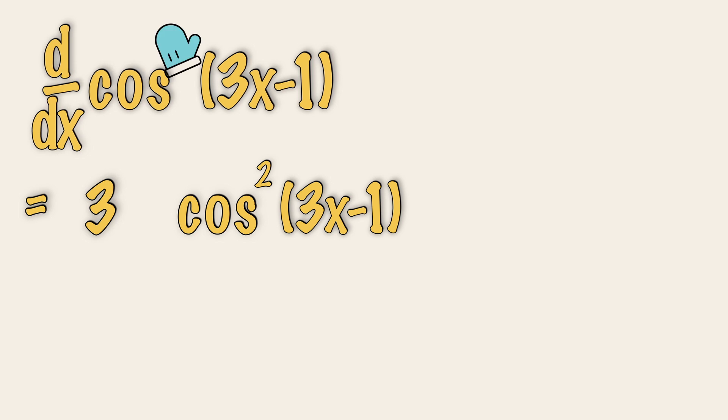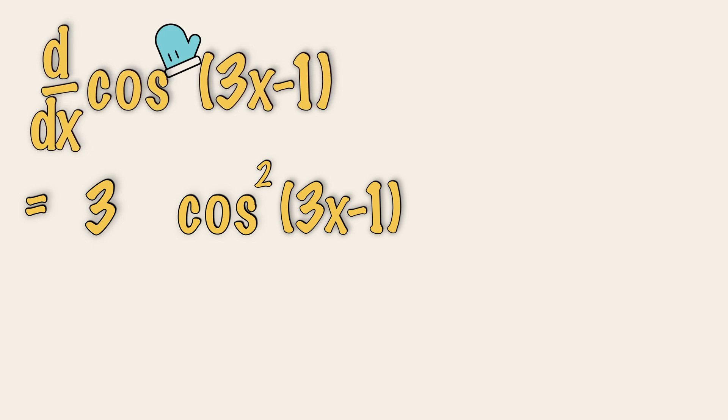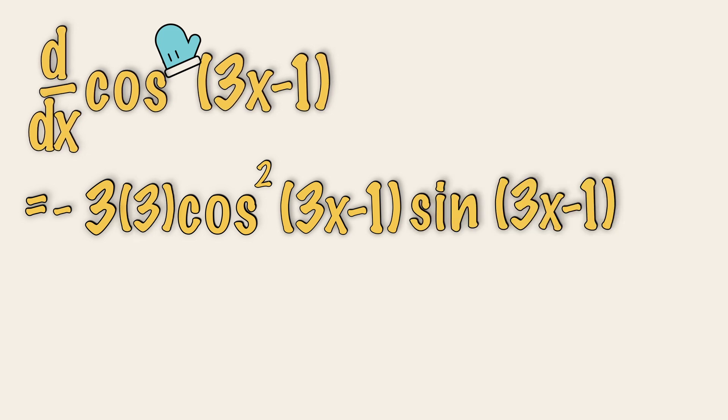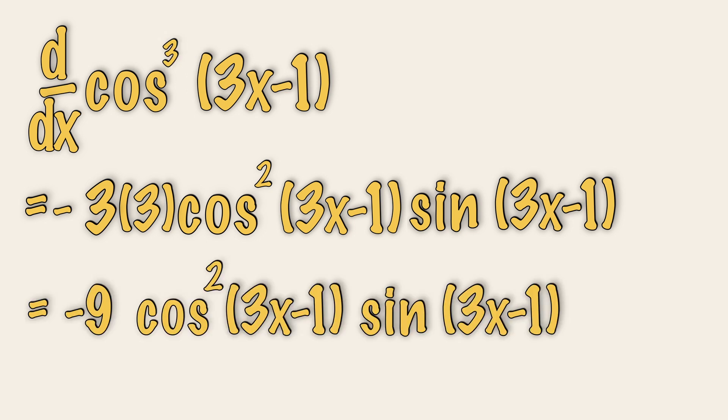Next, cover the power, and then differentiate what you see, which is cosine 3x minus 1. This will give us minus 3 sine 3x minus 1. Multiply this minus 3 to the front, and place the sine 3x minus 1 at the back. So simplifying, we will then have minus 9 cosine square 3x minus 1 sine 3x minus 1. If you get this flow right, you will be like a pro differentiating any trigonometric functions.